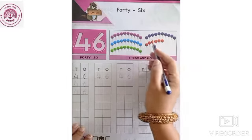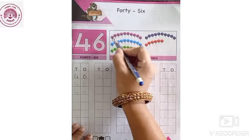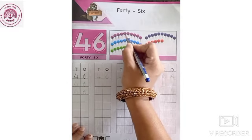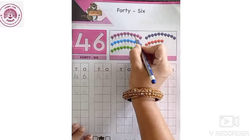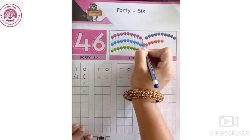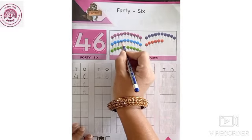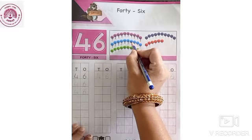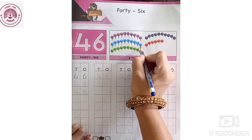Now, let's count the objects. There are 46 balloons. So, let's count it. 1, 2, 3, 4, 5, 6, 7, 8, 9, 10, 11, 12, 13, 14, 15, 16, 17, 18, 19, 20.